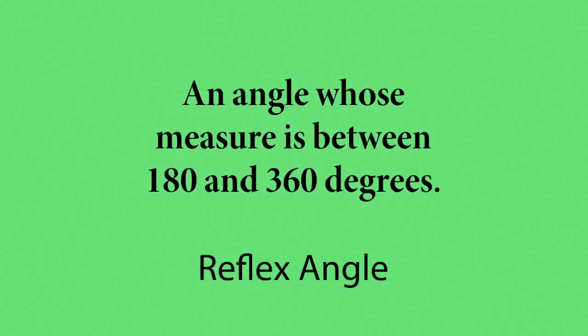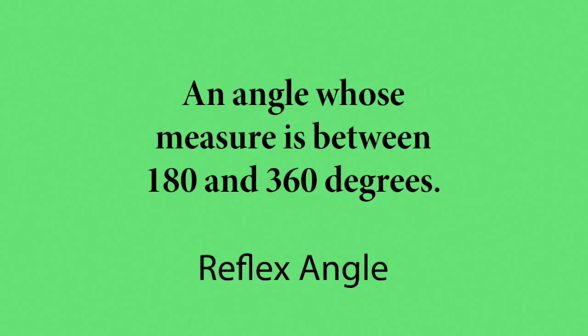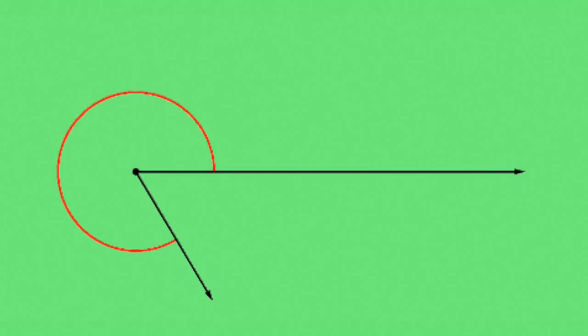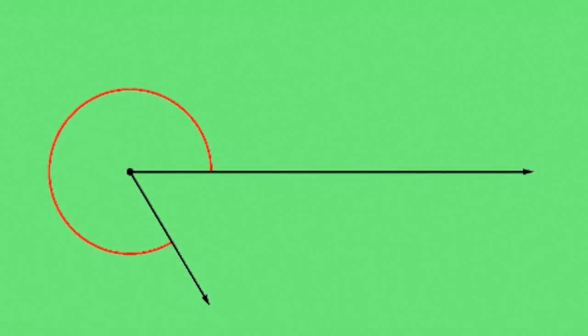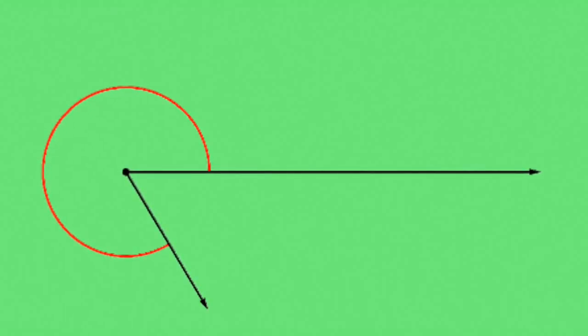Finally, an angle whose measure is bigger than 180 but less than 360 is known as a reflex angle. Notice that the angle wraps all the way around. It is not between those two lines as you might visually expect it to be, but it goes around on the outside. This is what makes it a reflex angle.